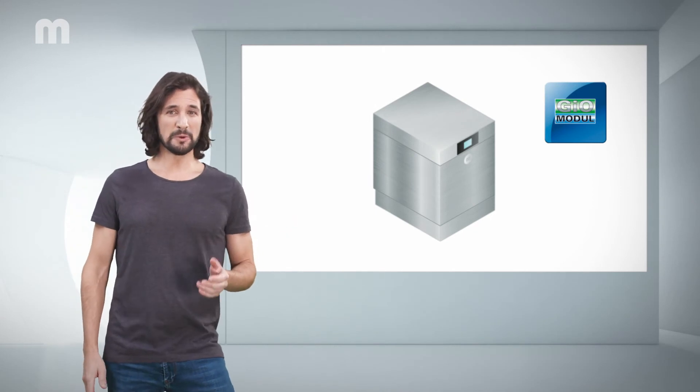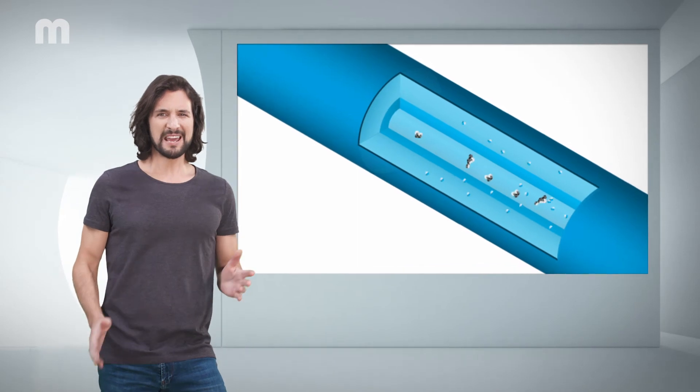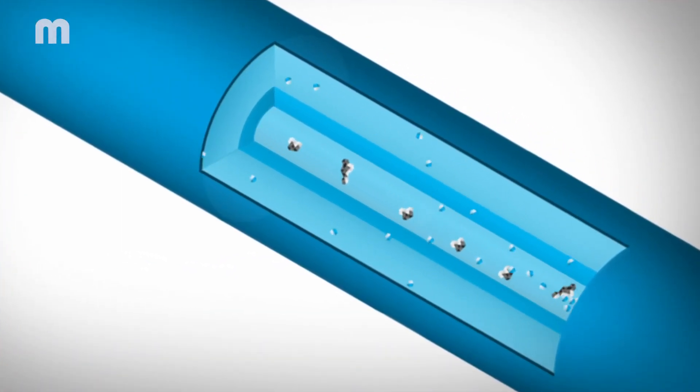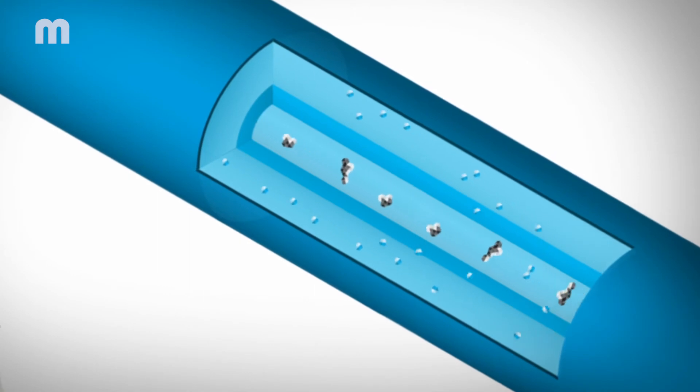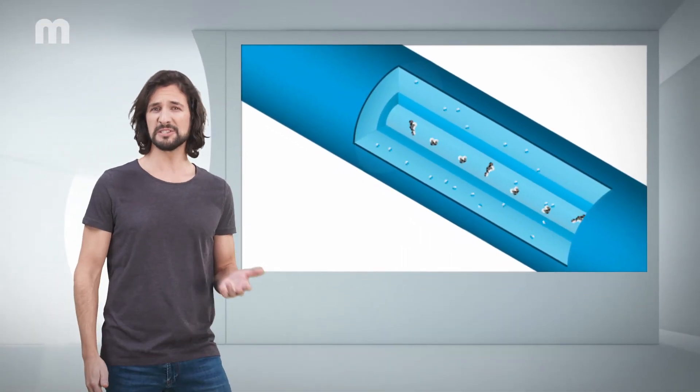This is available with the GEO module from Maiko. Now, in reverse osmosis, everything is sort of done at once. Almost all salts suspended in the water are withheld, and continuously flushed out with a portion of the water from the GEO module.